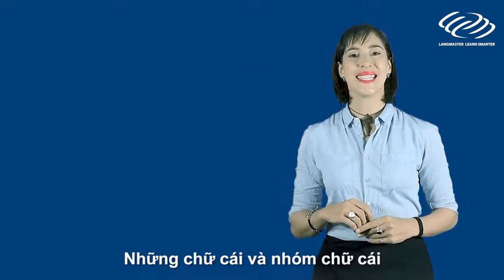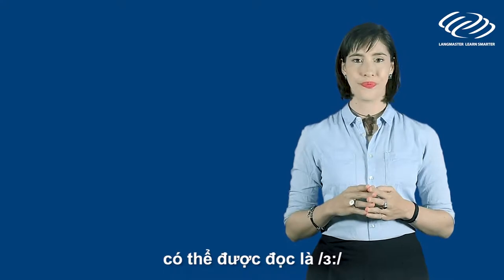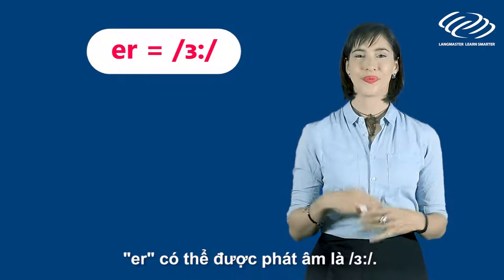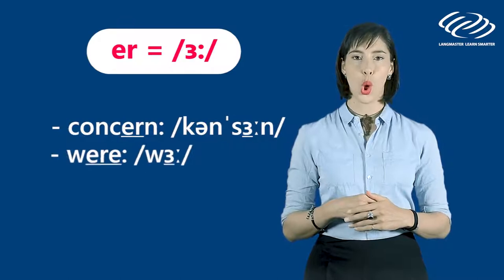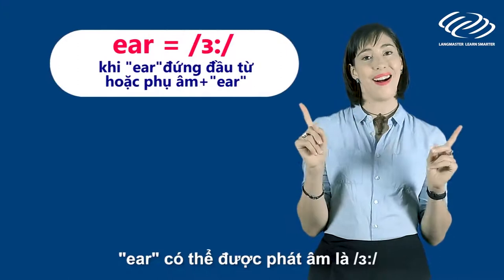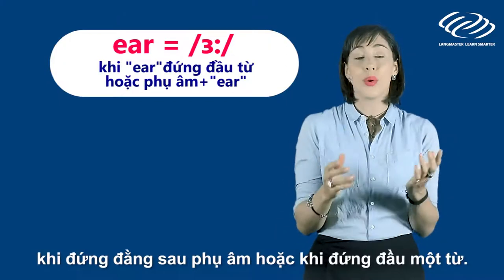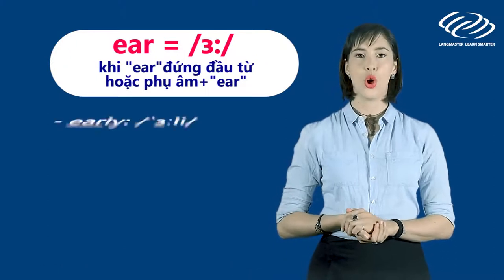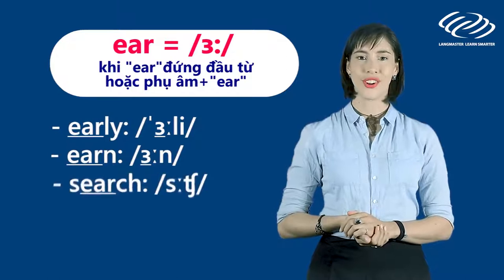The following letters and groups of letters are pronounced as E-R. E-R can be pronounced as E-R — for example: concern, were, perfect. E-A-R can be pronounced as E-R after some consonants or when it's at the beginning of a word — for example: early, earn, search.